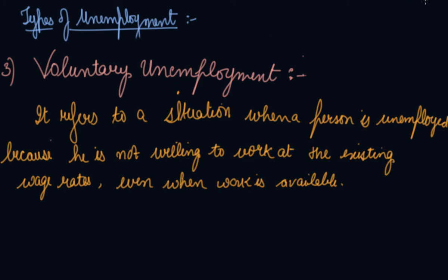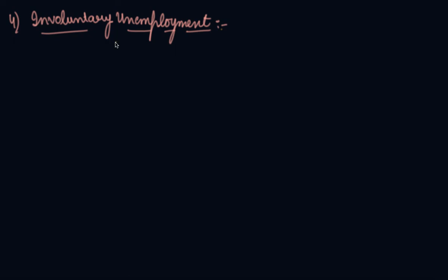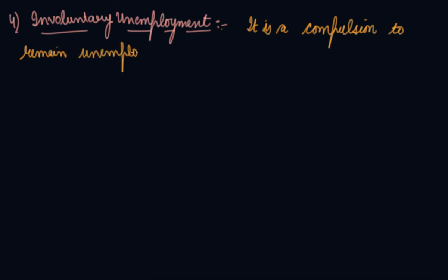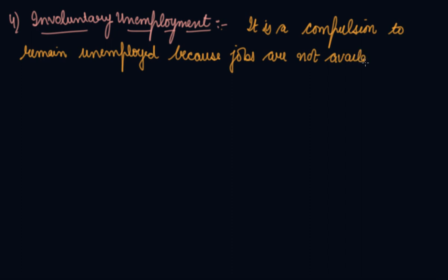The next one is involuntary unemployment. Involuntary unemployment means that you are not willing to be unemployed — you are ready to work at any wage rate offered in the market. But involuntary unemployment means that you are ready to work and you are not getting work; jobs are not available in the market, so you have to remain unemployed. This is a compulsion — involuntary unemployment is a compulsion to remain unemployed because jobs are not available in the market.